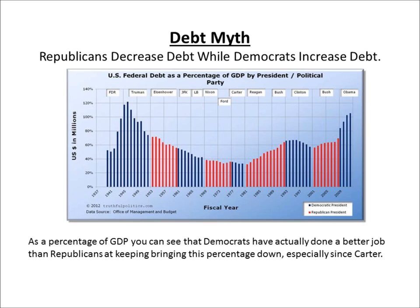Reagan was a big spender. He liked to do two things at the same time that really hurt the revenue side: he liked to cut taxes and increase spending on the military. The Cold War had a lot to do with that. Then under Clinton, the Democrat, it starts to go back down again as a percentage of GDP. Then under Bush it starts to rise back up, and at the end of Bush's last year it starts to really climb and continues in response to the Great Recession, which was the worst we've had since the Great Depression.